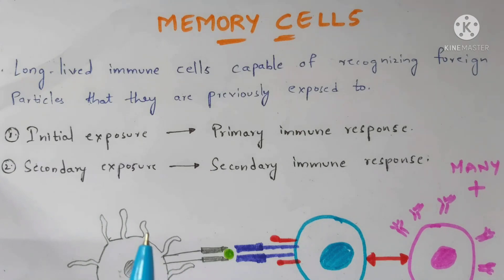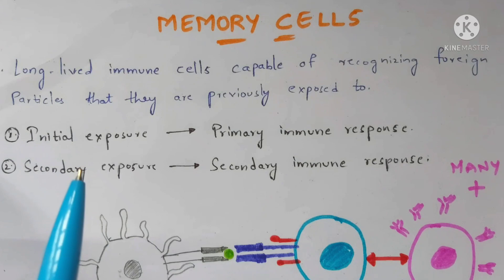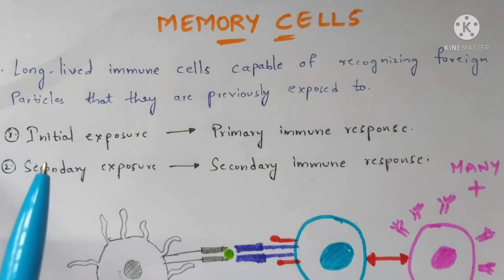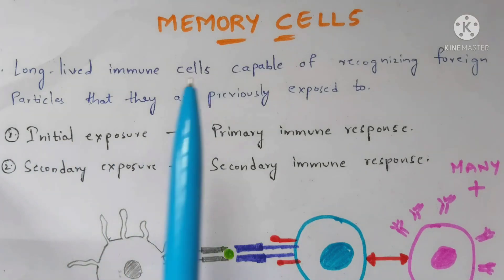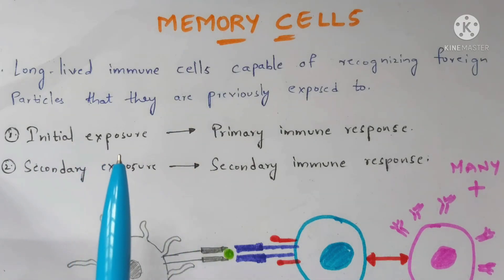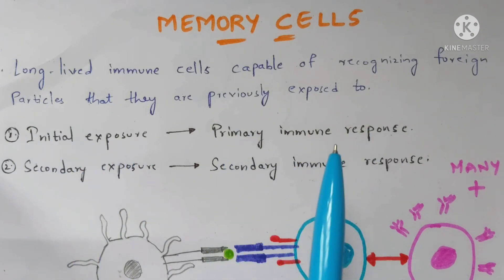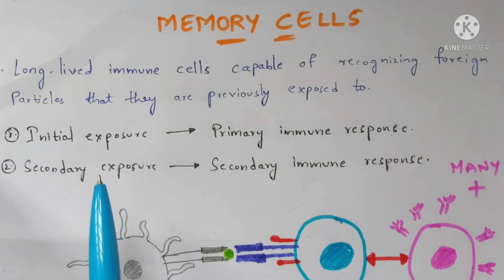For every human there will be two kinds of exposures to a particular antigen. The first is called the initial exposure, and if the same antigen attacks the body again, it is called the secondary exposure. In the case of initial exposure, memory cells don't take part — the immune response at this stage is called the primary immune response, where memory cells will not be activated.